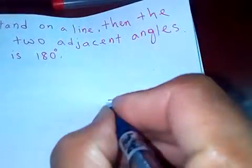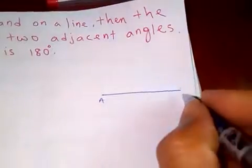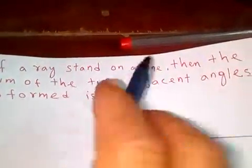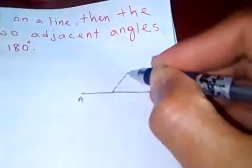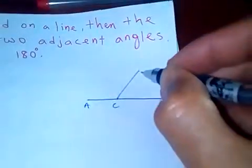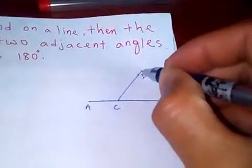Let's say this is A and B, and the question is that if a ray stands on a line, then let's draw here one ray. This is a ray. Let's say this is C and this is E D.